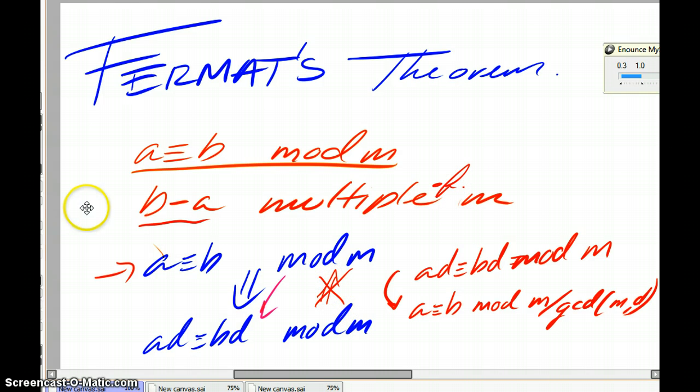Now another thing you should be familiar with is the basic properties of mods and arithmetic operations upon them. Crucially, you should be familiar with division. If a is congruent to b mod m, then it follows that ad is congruent to bd mod m for some multiplicative factor d. But it doesn't go the other way around. So this implies this, but this does not imply this. If you have ad congruent to bd mod m, what it actually implies is a congruent to b mod m divided by the greatest common divisor of m and d.